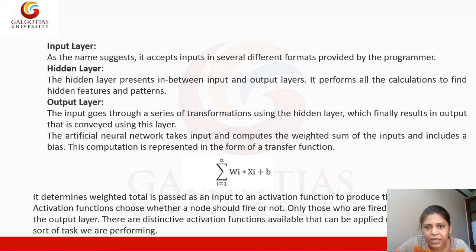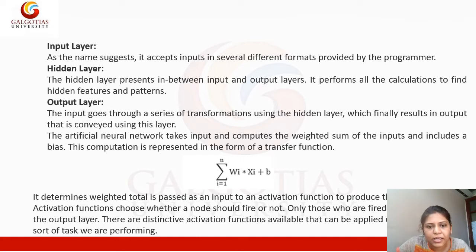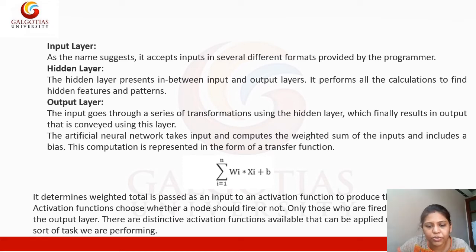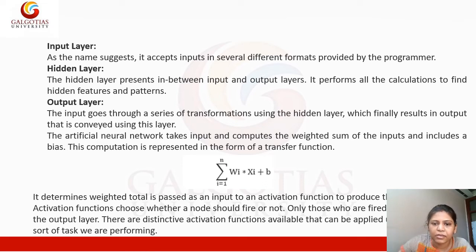The artificial neural network takes inputs and computes the weighted sum of the inputs and includes a bias. The weighted sum computation is represented in the form of a transfer function, which is performed at the hidden layer. Here, wi is the weight, xi is the input, and b is the bias. Weights show the strength between the input node and the hidden layer — that is, how much strength a given feature has connecting an input node to a hidden layer node.